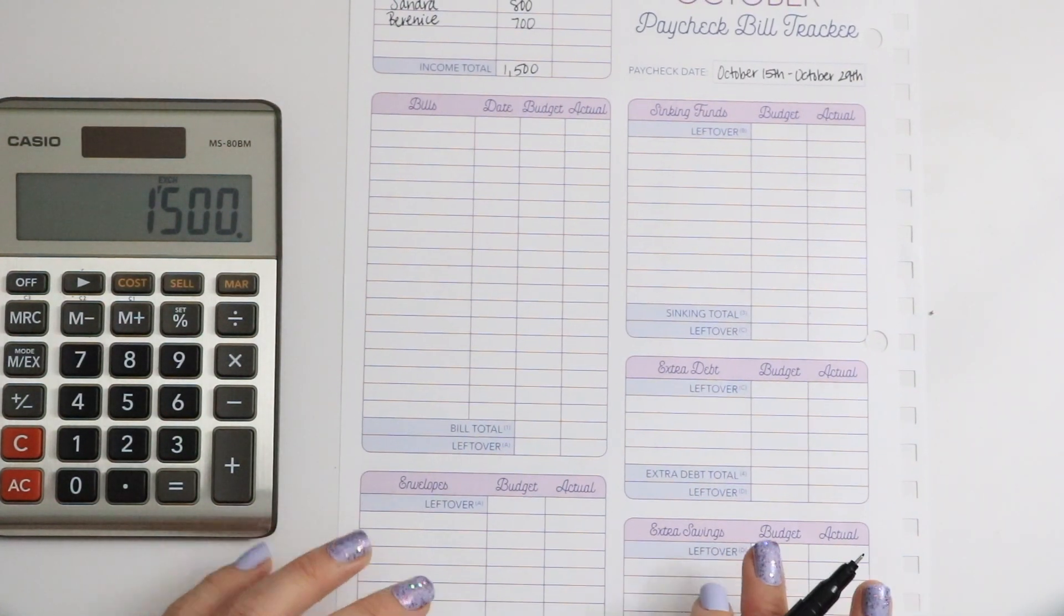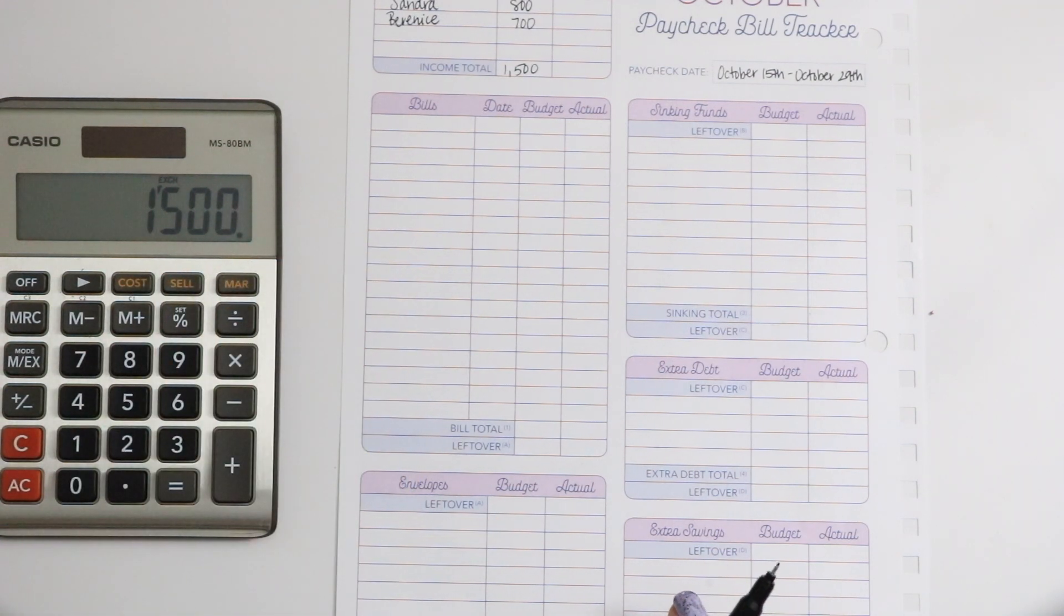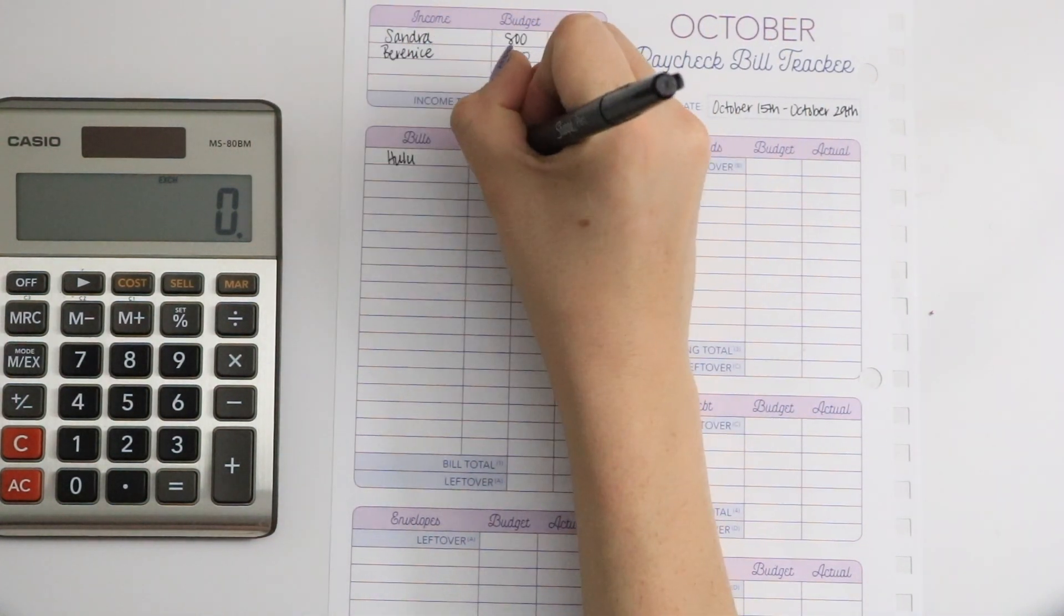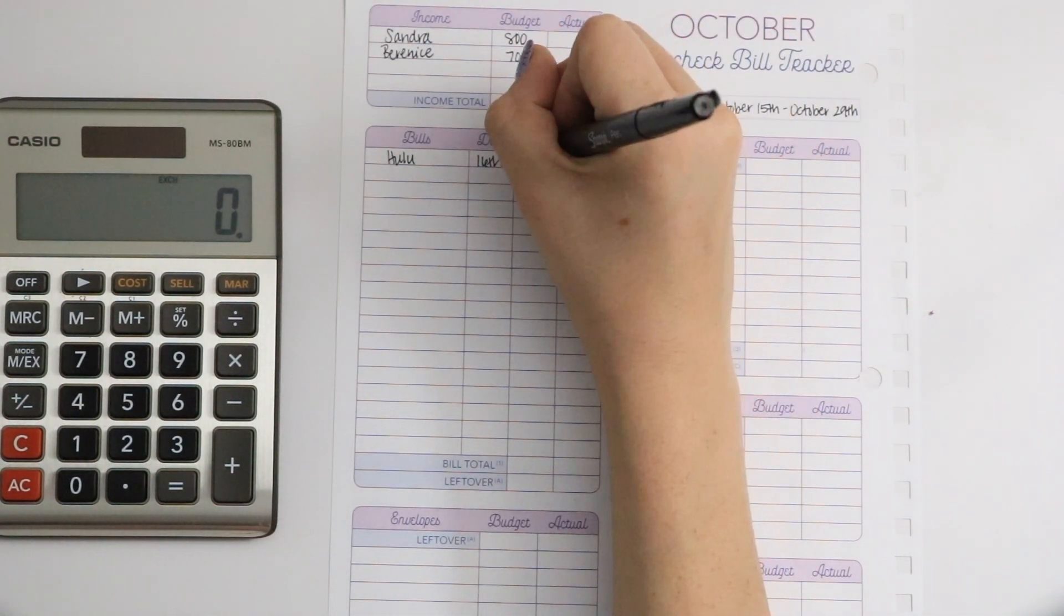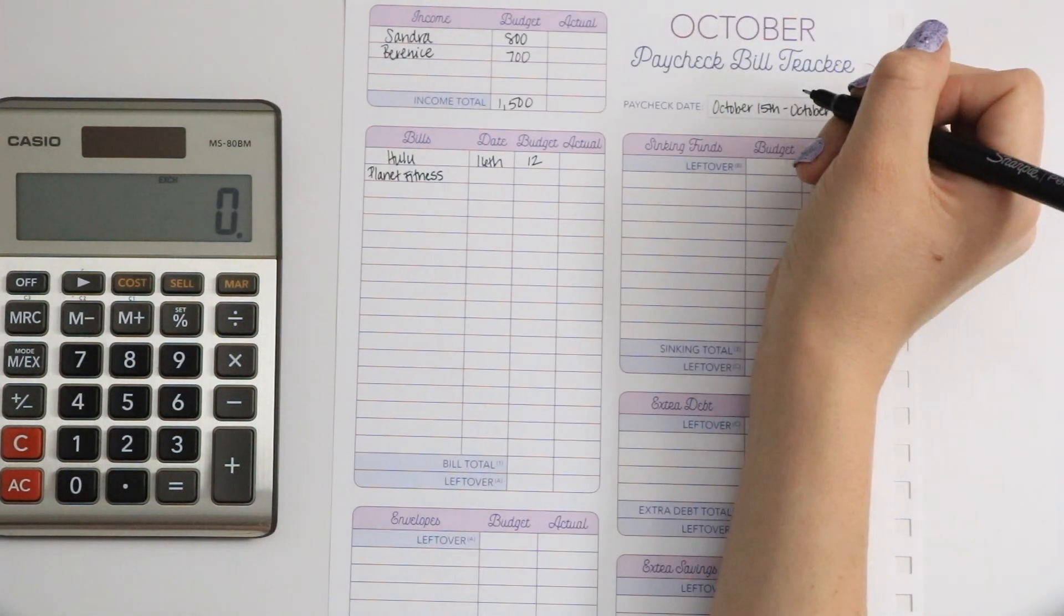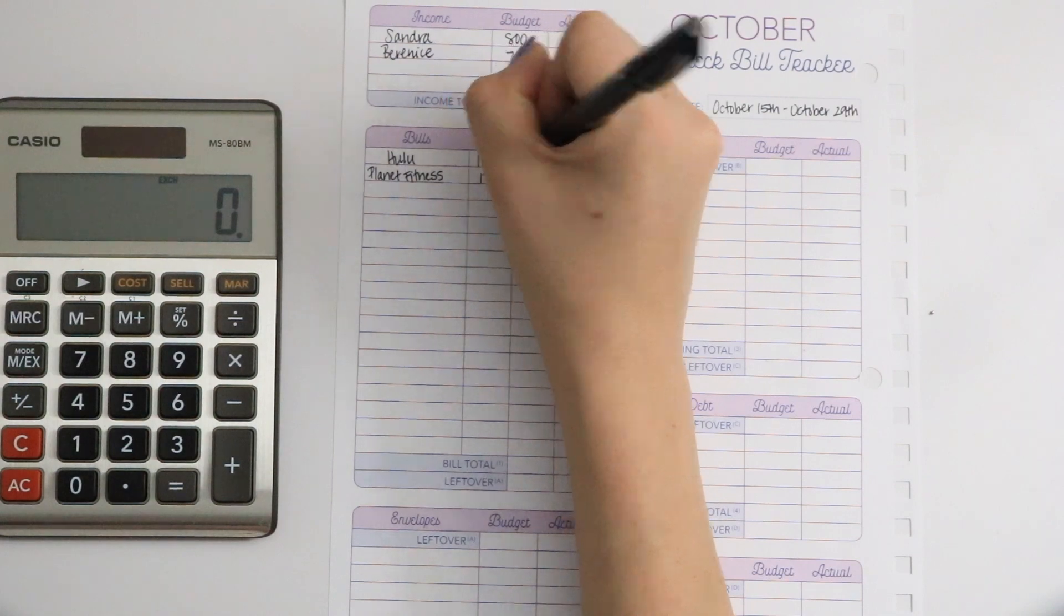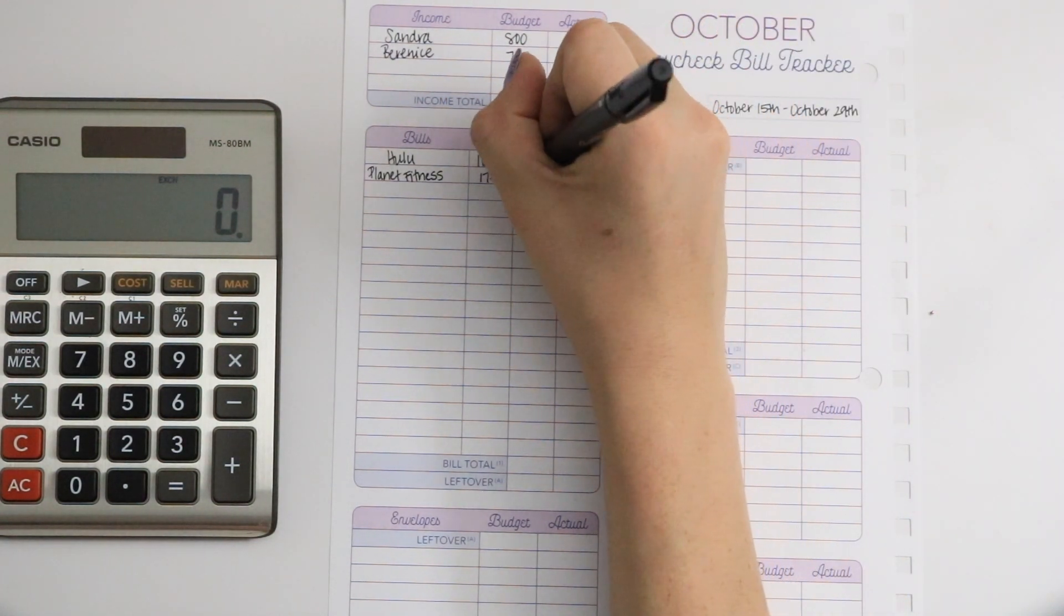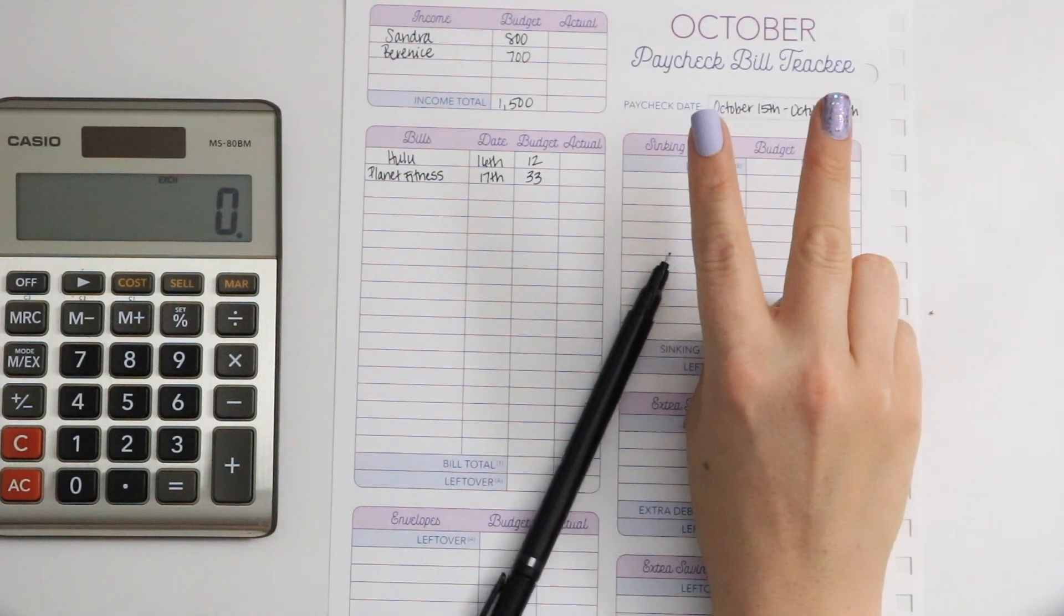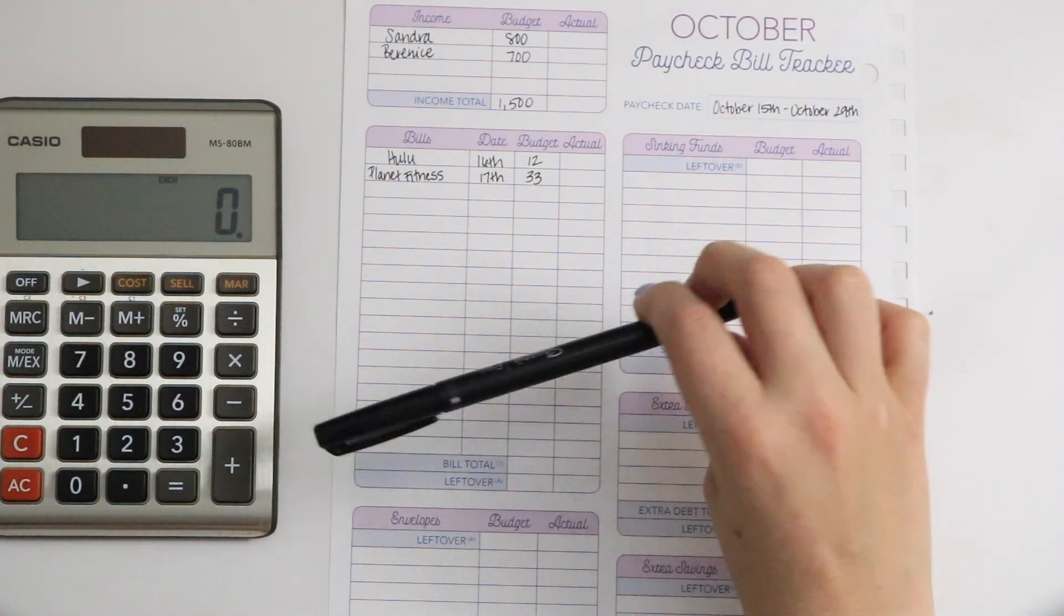We're going to start with the bills and this month we have Hulu that is due the 16th and we are budgeting $12. Next is Planet Fitness that is due the 17th and that will be $33 because we do have two accounts for Planet Fitness.